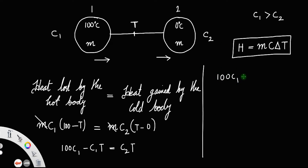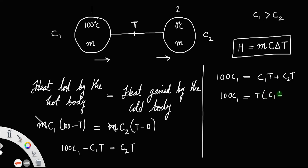So 100c1 equals c1·t plus c2·t. Taking t outside: 100c1 equals t times (c1 plus c2), therefore t equals 100c1 divided by (c1 plus c2).